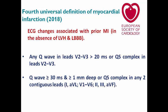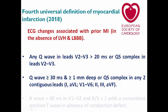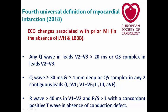The second criterion is a Q-wave more than or equal to 30 ms and more than or equal to 1 mm depth, or a QS complex, in any two contiguous leads from I, aVL, V1 through V6, II, III, and aVF. The third is an R-wave more than 40 ms in V1 or V2 with an R/S ratio more than 1 with a concordant positive T-wave in the absence of conduction defects.